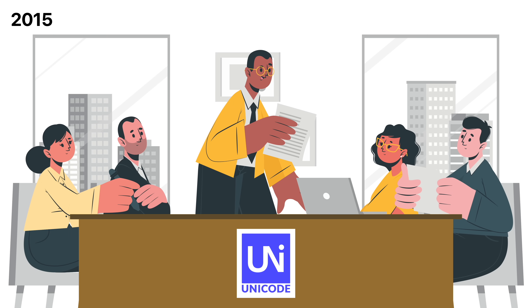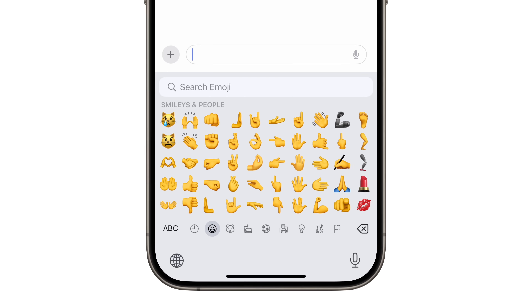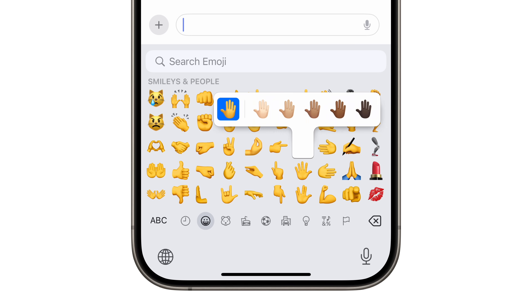It was the result of a process that began in 2015, when the Unicode Consortium — an organization responsible for creating industry standards for emoji — decided to make the characters more inclusive. Instead of only being yellow, they recommended emoji also include five skin tone options. Implementing this change was fairly easy, since emoji with yellow skin simply needed five additional variations.